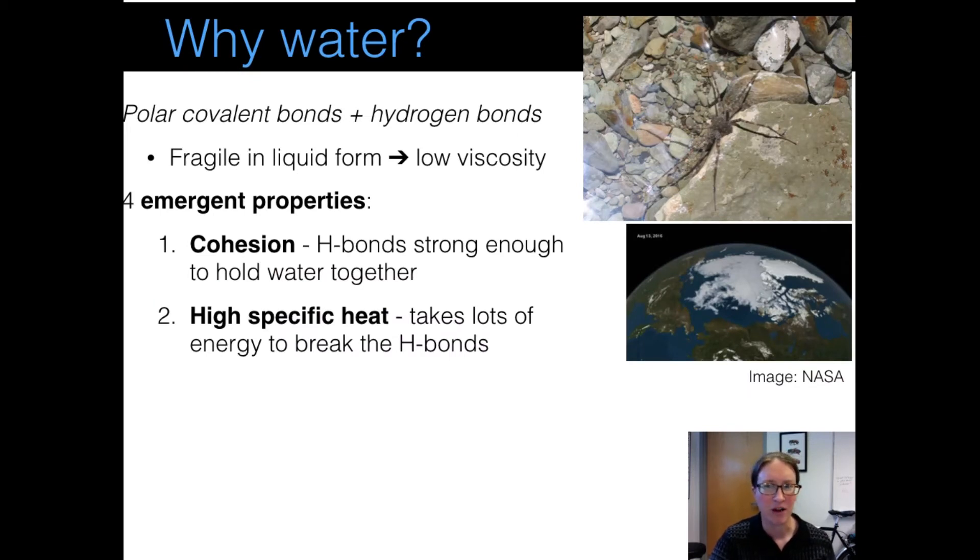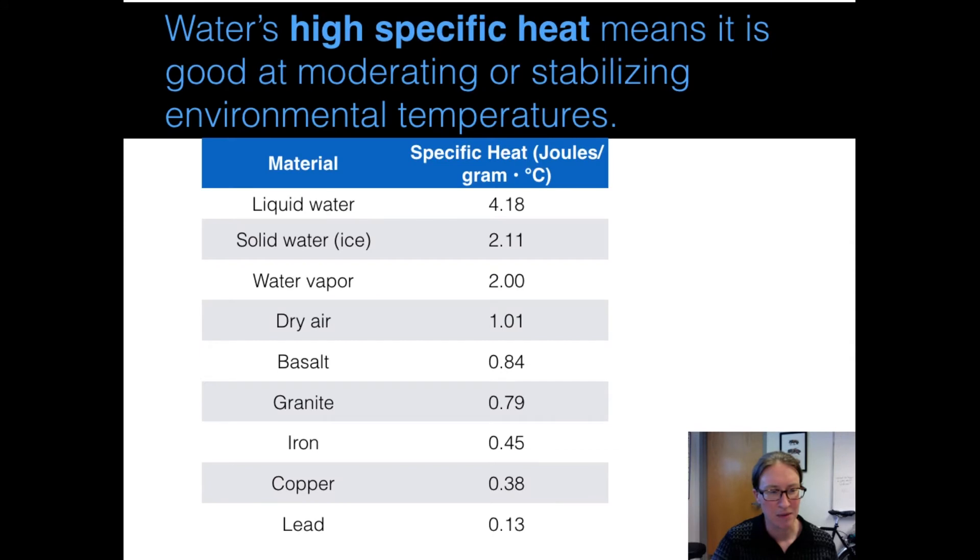The second property of water that facilitates life is that water has a very high specific heat. And just as a reminder of what specific heat is, specific heat is the amount of energy that it takes to change the temperature of a substance by one degree Celsius. And to help make that a little more concrete, here's a table that shows what I mean by that. This shows how much energy it takes to warm up a gram of liquid water. So here in this table, for liquid water it takes 4.15 joules to warm up one gram of liquid water. And then meanwhile, if we look further down on this table at things like basalt and granite and iron, you notice that it takes less than a quarter of the amount of energy to heat up these other substances by the same amount.